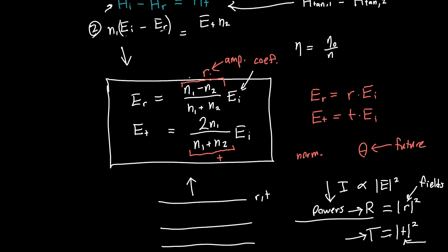Coming back to the beginning: what if we had assumed the electric field flipped sign upon reflection instead? We'd get a different value for r — specifically the negative, giving n2 minus n1 instead of n1 minus n2 — which compensates for the assumed flip. The beauty is that physics works no matter how you set up your conventions. The convention we used is the standard one you'll find in textbooks and on Wikipedia.